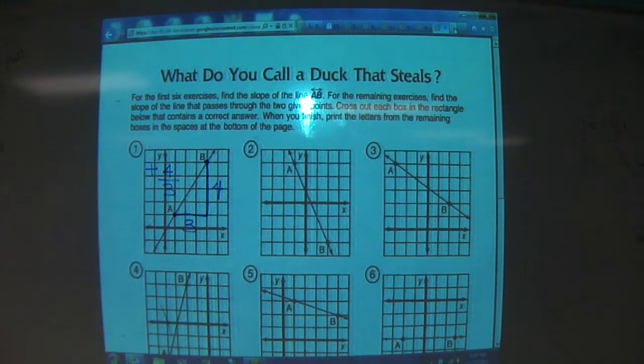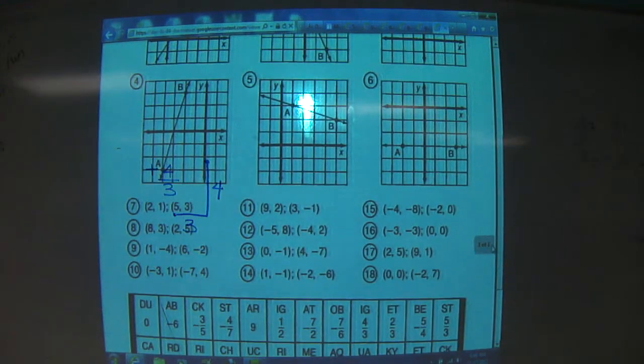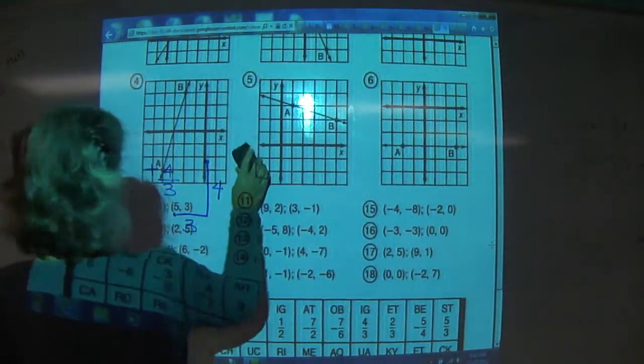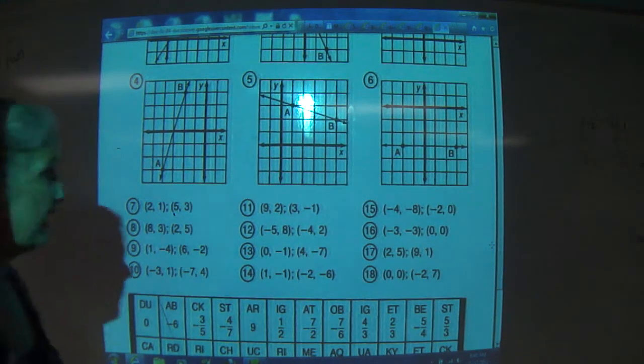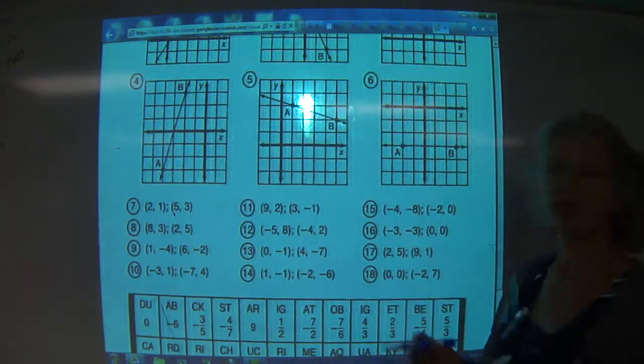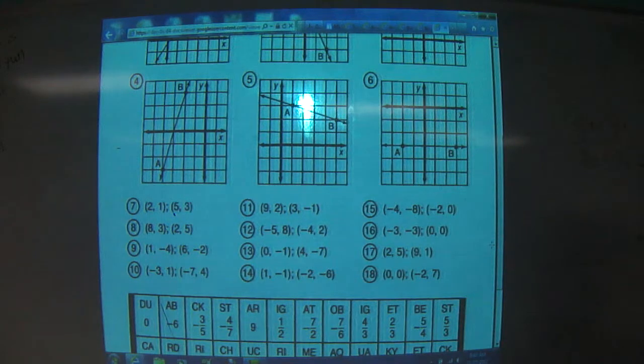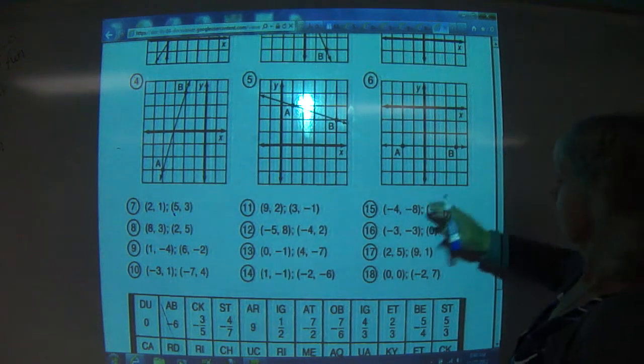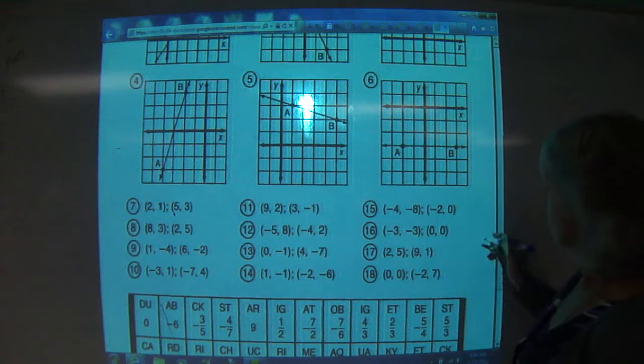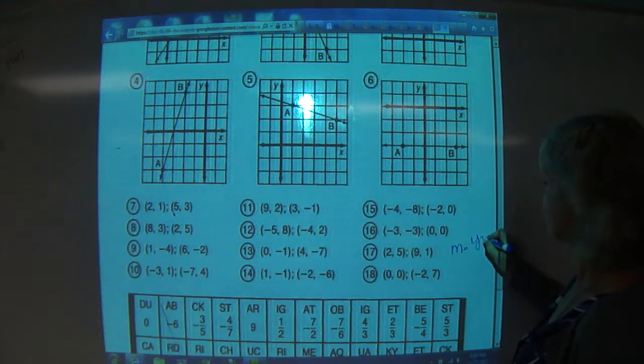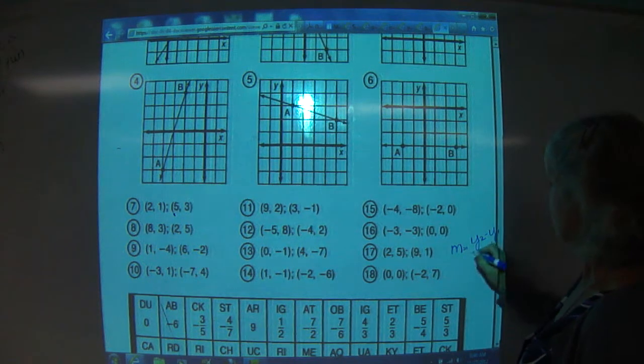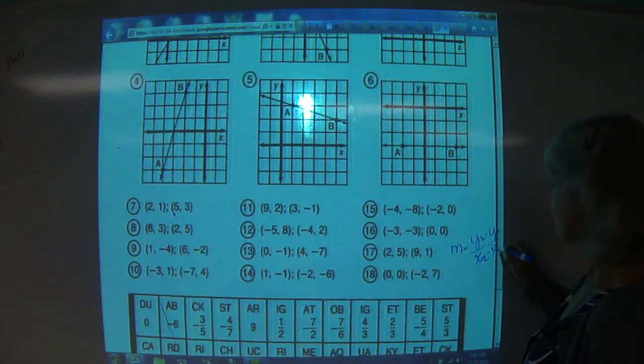Now, the bottom half of this assignment is exactly what we were doing with the slope formula. So if you look at, we're doing slope down here, we're doing M equals Y2 minus Y1 over X2 minus X1.